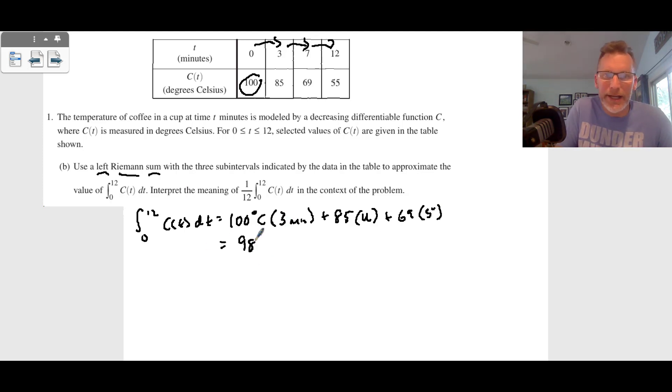And when I do this in my calculator, I end up getting 985 degrees Celsius times minutes. And so degrees Celsius times minutes doesn't really mean a whole lot, but that's your answer for the left-hand Riemann sum.